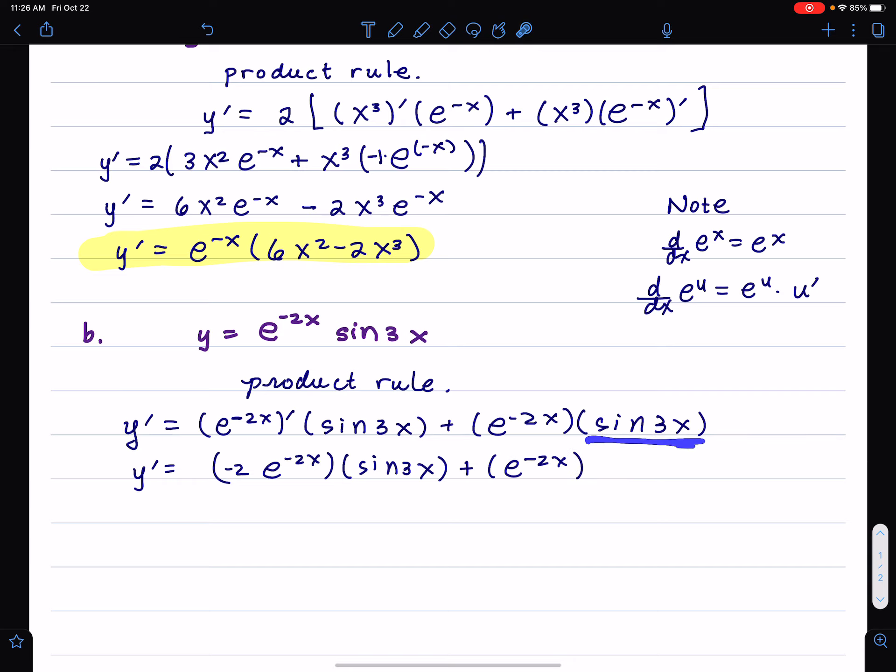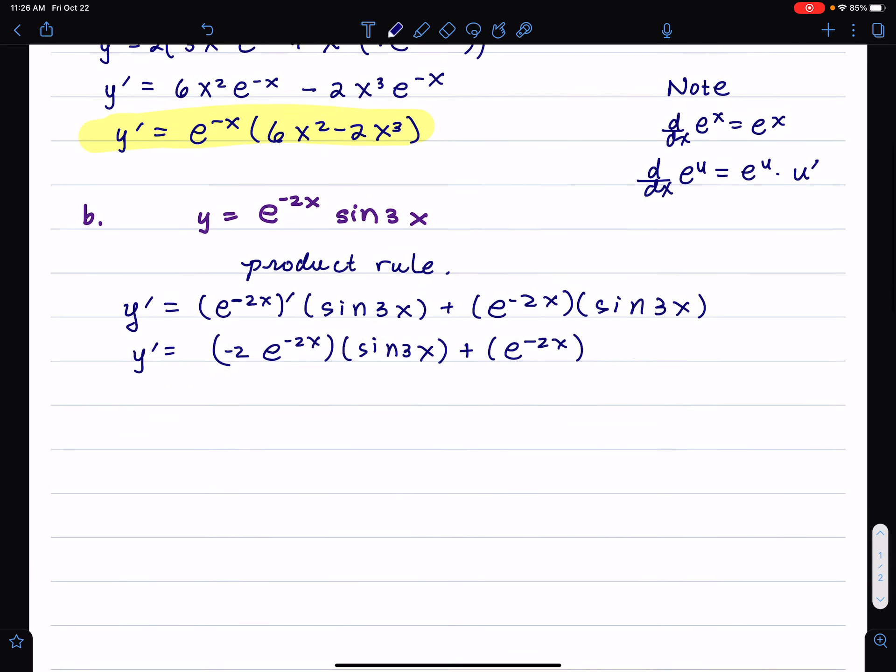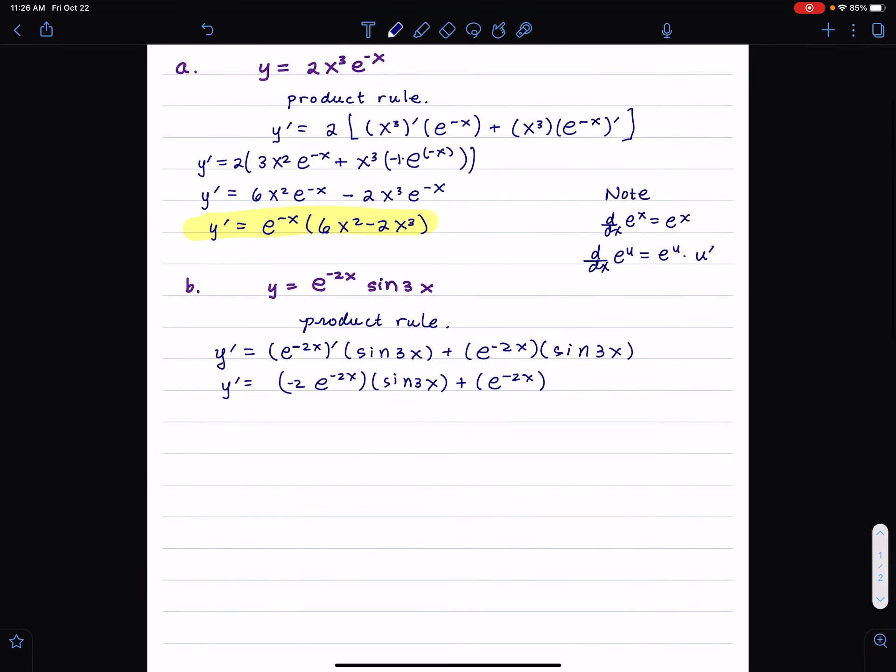Now, we take the derivative of sine 3x. Let's write a little formula below here. We know the derivative of sine x is cosine x. This is an aside. The derivative, using the chain rule, the derivative with respect to x of sine u is cosine u times u prime, u prime meaning du dx. That's the chain rule. You take the derivative of the outside, sine u, that derivative is cosine u. Then, you look at the inside u, take that derivative, and that's u prime.